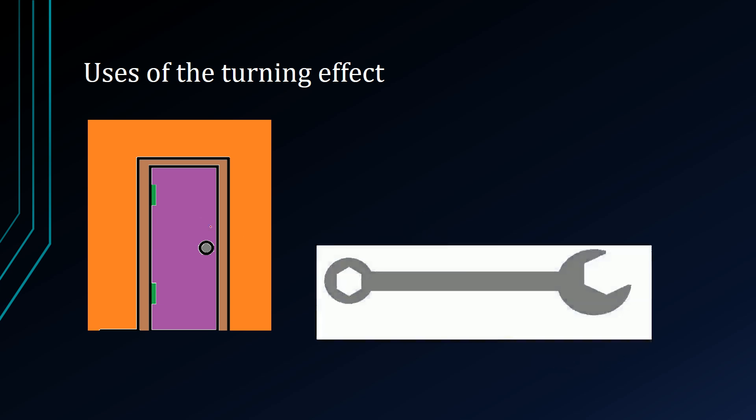In the next case, look, for example, a spanner. We can see that we can insert the bolt into the hole that is prepared for it, and we can apply a force causing it to turn. The bolt in this case, where it is fixed, is the pivot or the fulcrum.